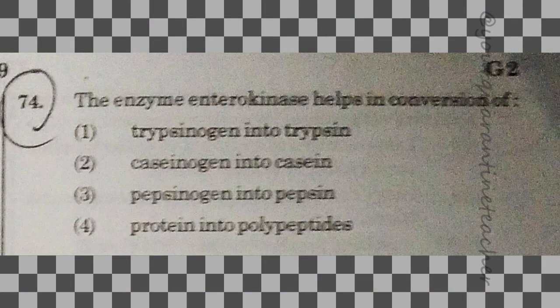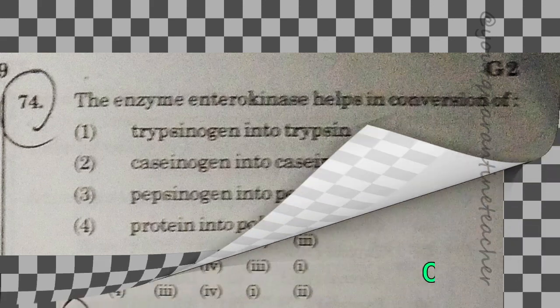74th question: the enzyme enterokinase helps in the conversion of — option 1 — trypsinogen into trypsin. That is the correct answer.